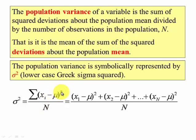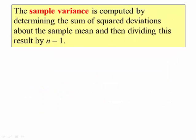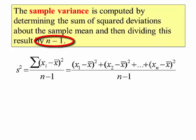The sample variance is computed by determining the sum of the square deviations about the sample mean, that's x bar, and then dividing this result by n minus 1. So here is the formula for the sample variance. This is what we'll be using in this class. So you take each value, subtract the x bar, the mean, and then you square it, and then you add all those up and divide by n minus 1.